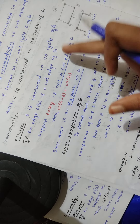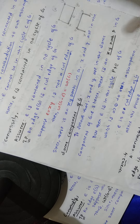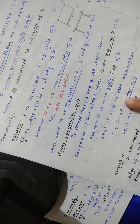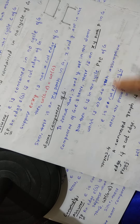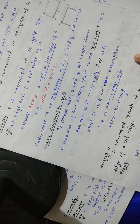We assumed E is not a cut edge — that was wrong. Therefore E is a cut edge of G. So we have proved the theorem.